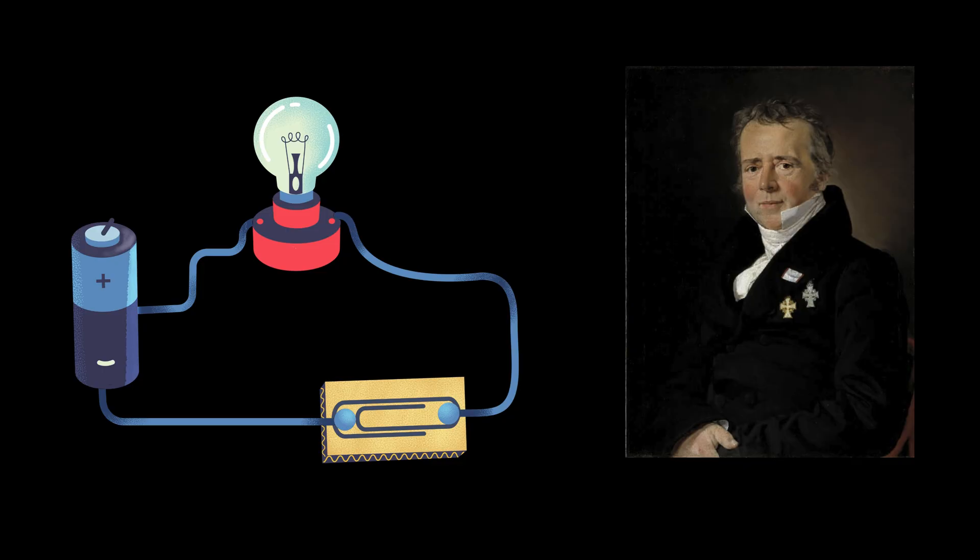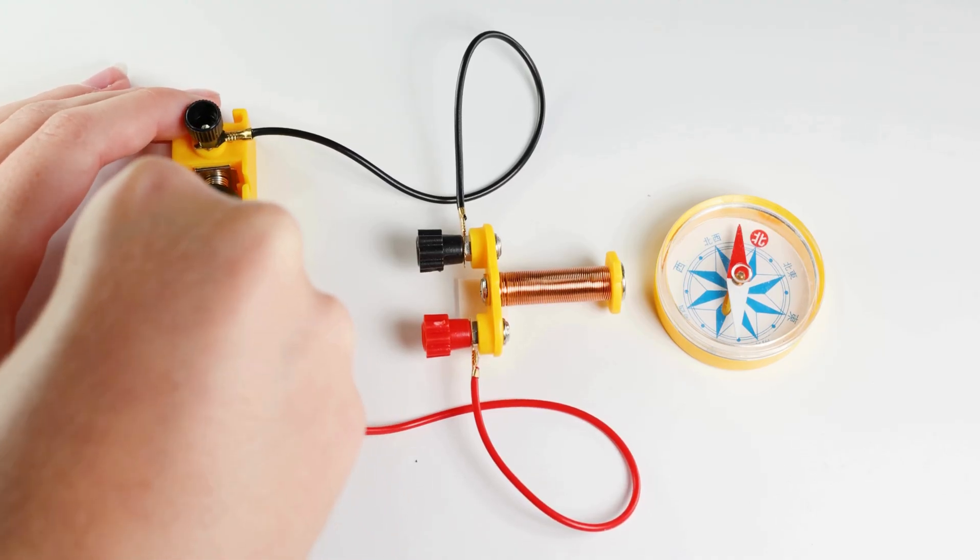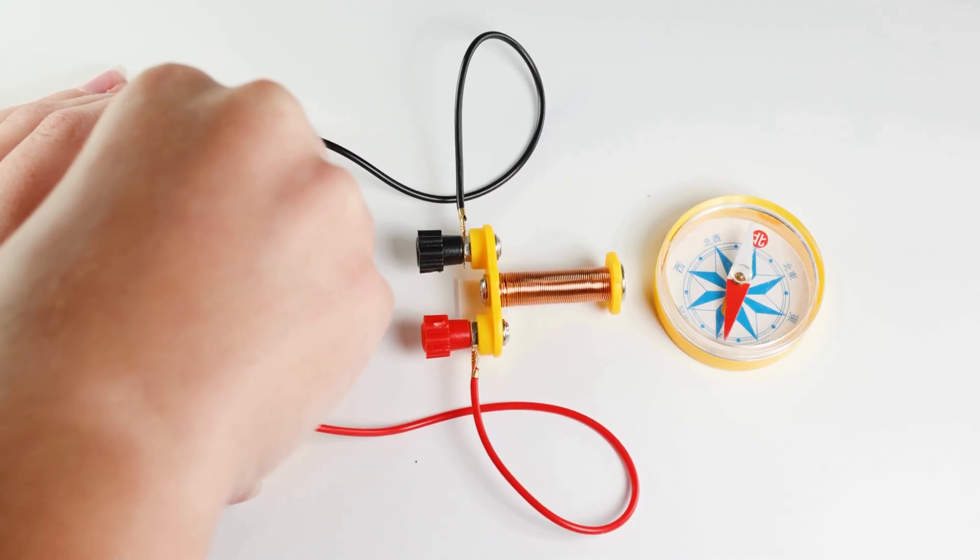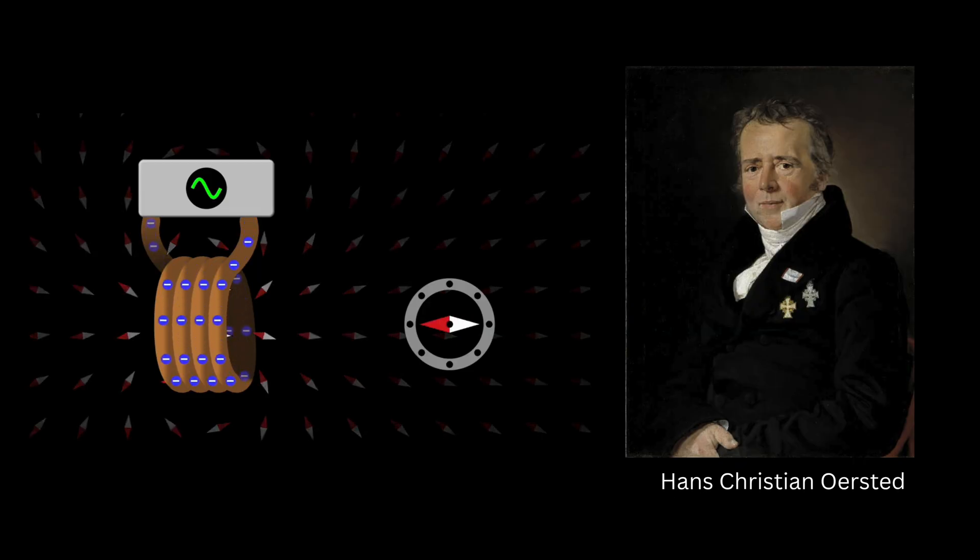One of the most surprising results came when a Danish scientist named Hans Christian Oersted noticed something unusual. When he passed an electric current through a wire, a nearby magnetic compass needle moved. This meant that electricity could create magnetism. It was a breakthrough.